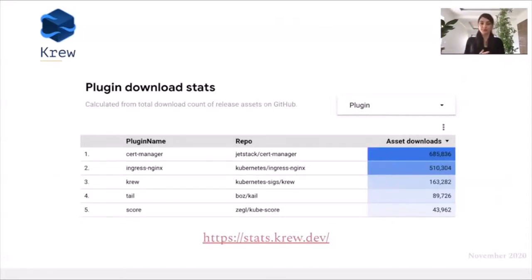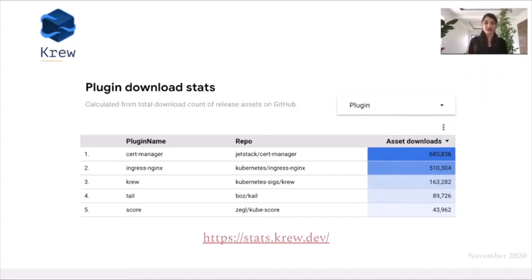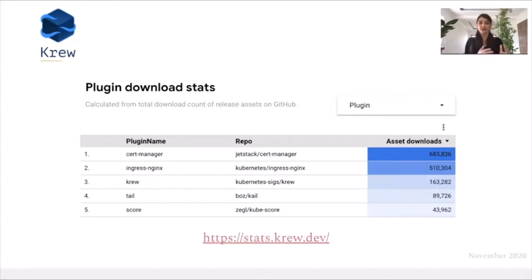You can think about krew as a service discovery for plugins. Currently, it allows the install of more than 90 custom commands for kubectl. A cool feature about krew is the fact that it has its own version manager, so you can have a separate way of managing your plugin versions for krew rather than tying it to your project versioning. Looking at the most widely used plugins at the moment, CertManager has taken the lead with more than 700,000 downloads — it's a plugin which allows management of TLS for a Kubernetes cluster. Ingress Nginx is another plugin which allows inspection of your Nginx controller within Kubernetes. Krew itself has been downloaded more than 150,000 times. Tail is another plugin which allows streaming of logs from a collection of pods, while Score is a tool which allows static analysis of our YAML manifests.